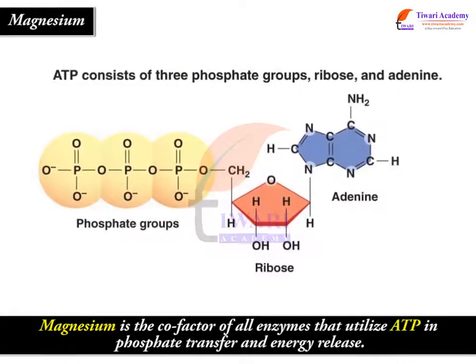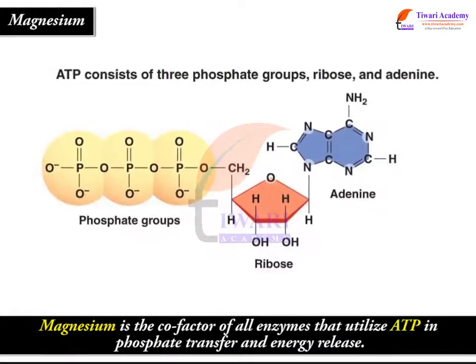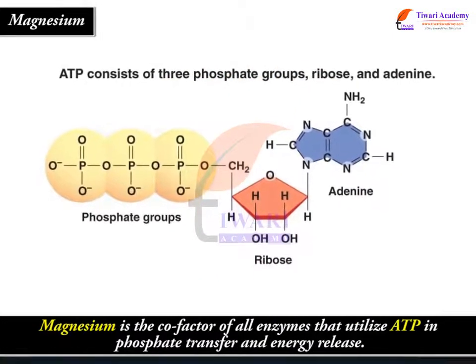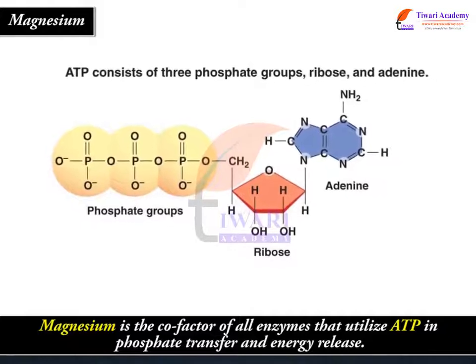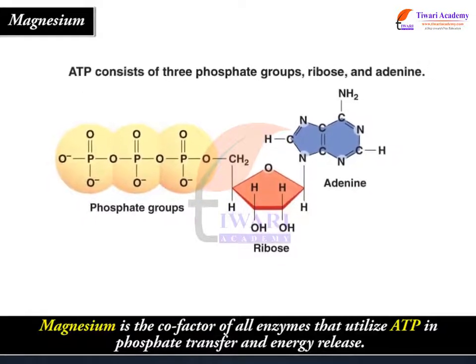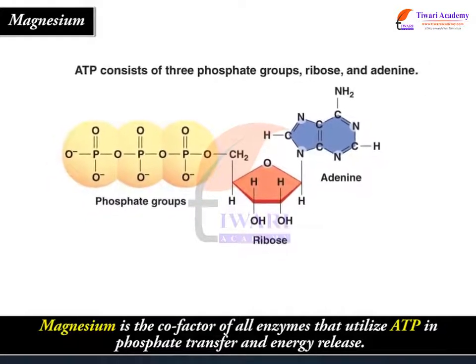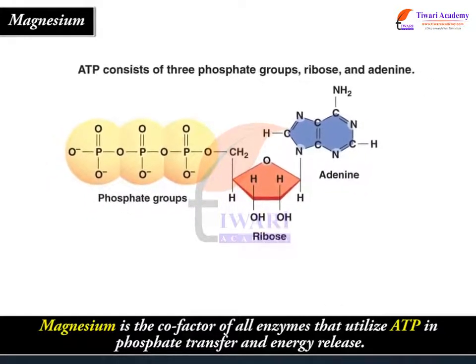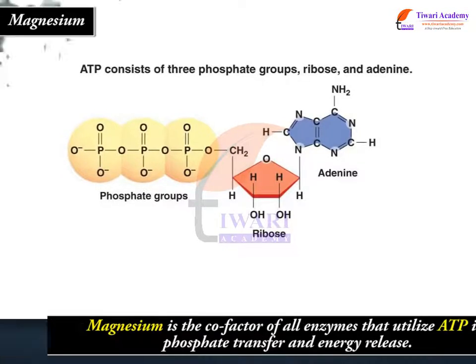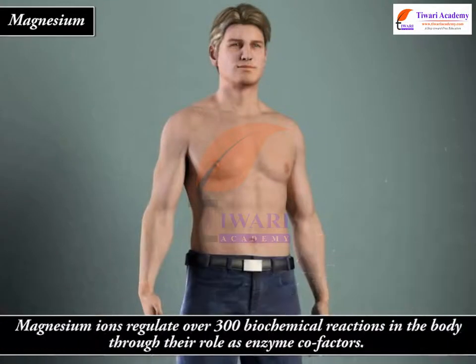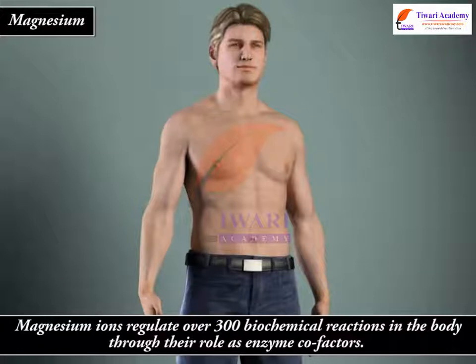Magnesium is the cofactor of all enzymes that utilize ATP in phosphate transfer and energy release. Magnesium ions regulate over 300 biochemical reactions in the body through their role as enzyme cofactors.